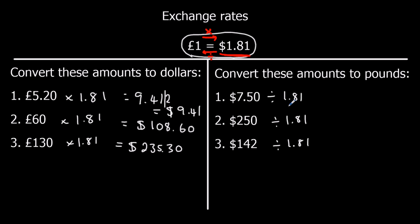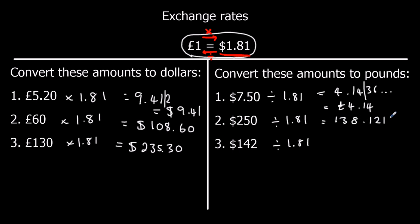Now converting back — divide. So typing into the calculator: 7.50 divide 1.81, that gives me 4.14... To two decimal places, that's £4.14, because it's not 5 so it's not going to round up. 250 divided by 1.81 gives 138.21..., so that's £138.12. And finally 142 divide 1.81 gives 78.45, so rounding straight away that's £78.45.